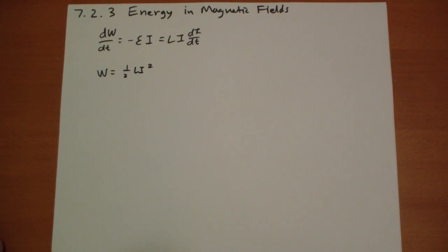That shouldn't surprise you. There's a very similar equation in mechanics, where if you're thinking of L as the mass and I as the velocity, there's a really huge parallel right here. One-half MV squared for kinetic energy. This is one-half LI squared.